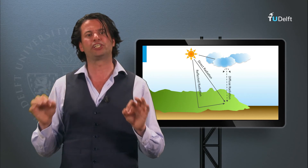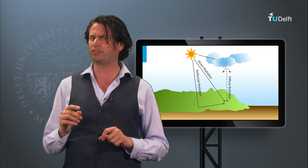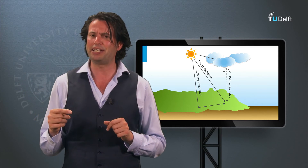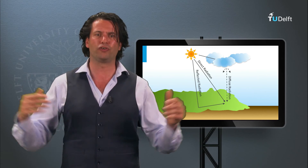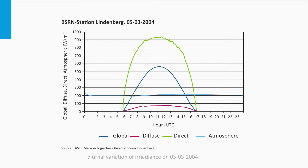Up to now we have only considered light coming directly from the sun incident on the Earth's surface. However, 26% of the light is scattered in the atmosphere, meaning light falls on a surface from various angles. The amount of solar radiation falling on a horizontal surface is characterized by global horizontal irradiance — the energy that comes from all directions. It consists of direct normal radiation from the sun and diffuse radiation from the sky.